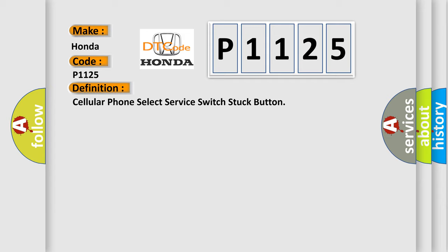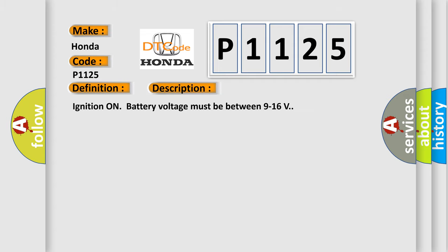And now this is a short description of this DTC code. Ignition on battery voltage must be between 9 to 16 volts.